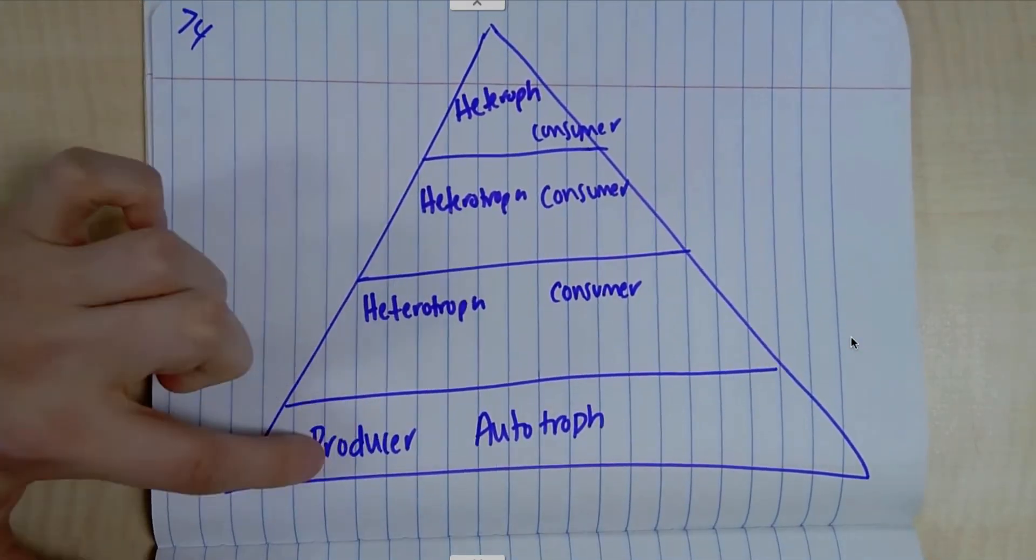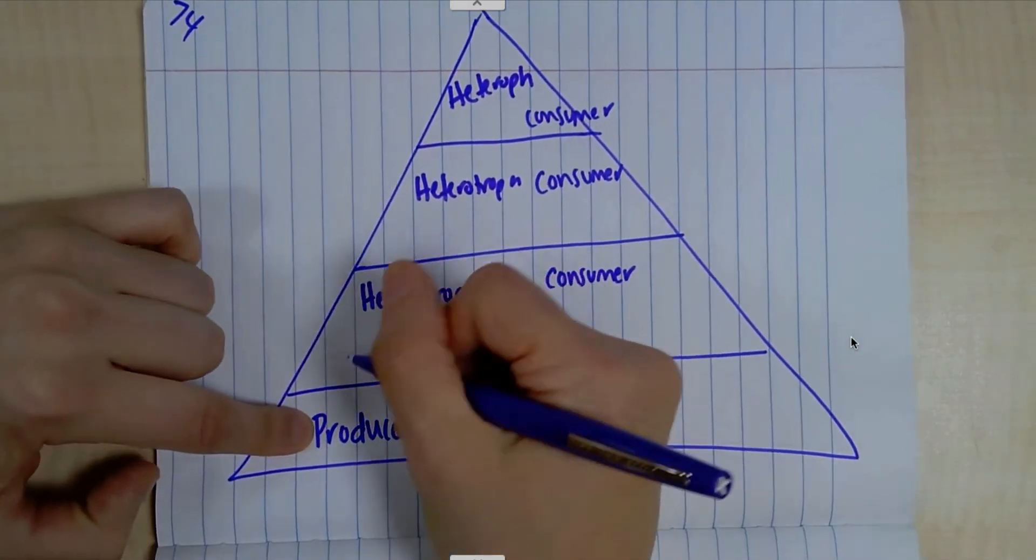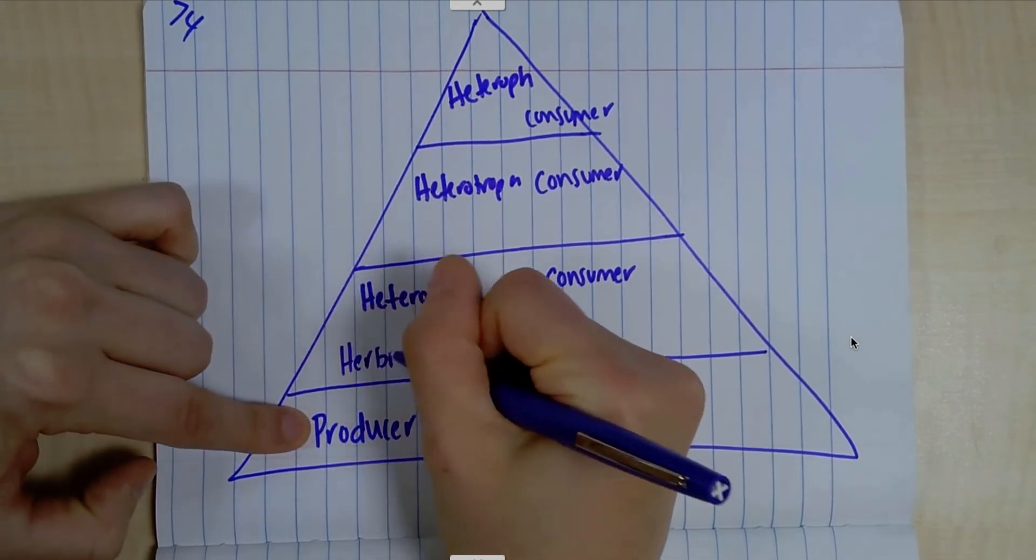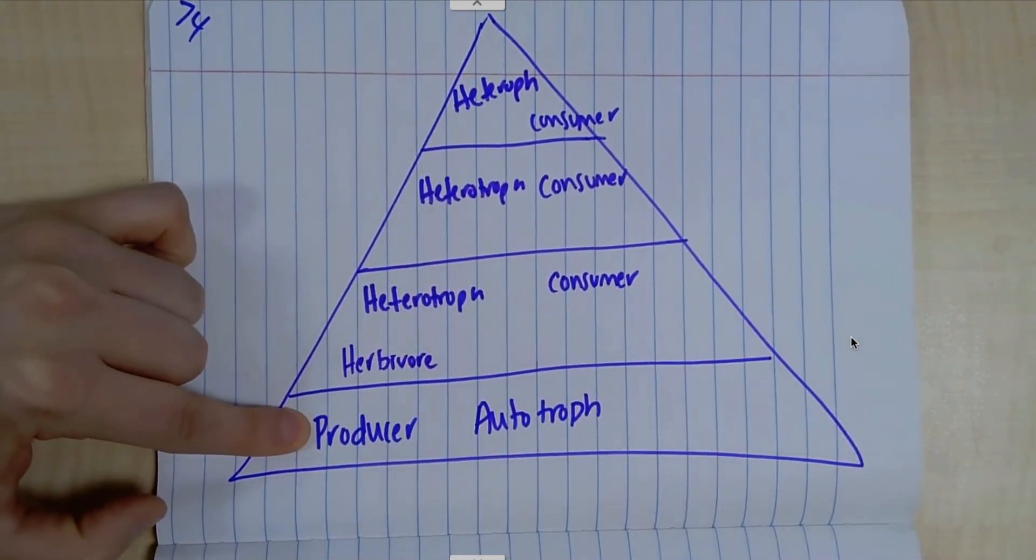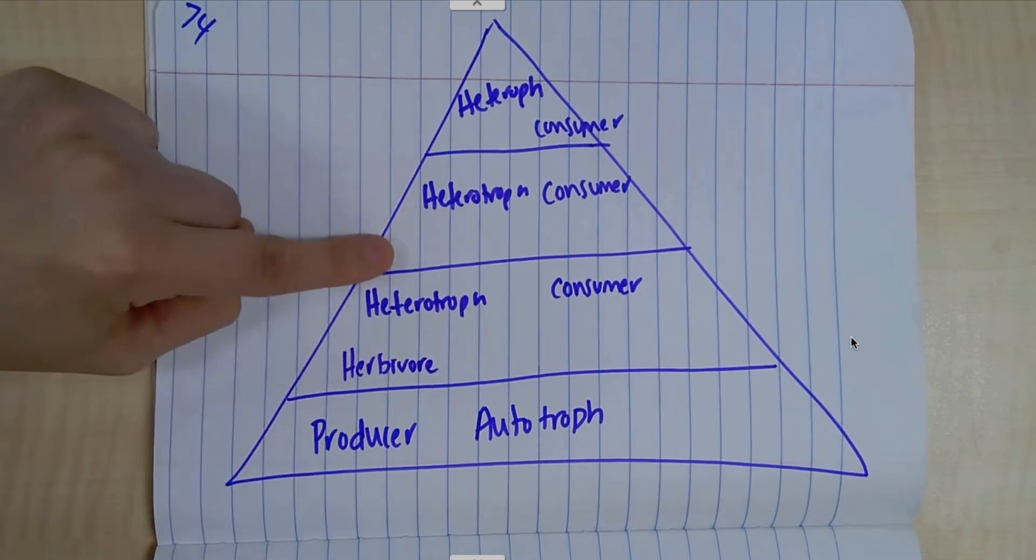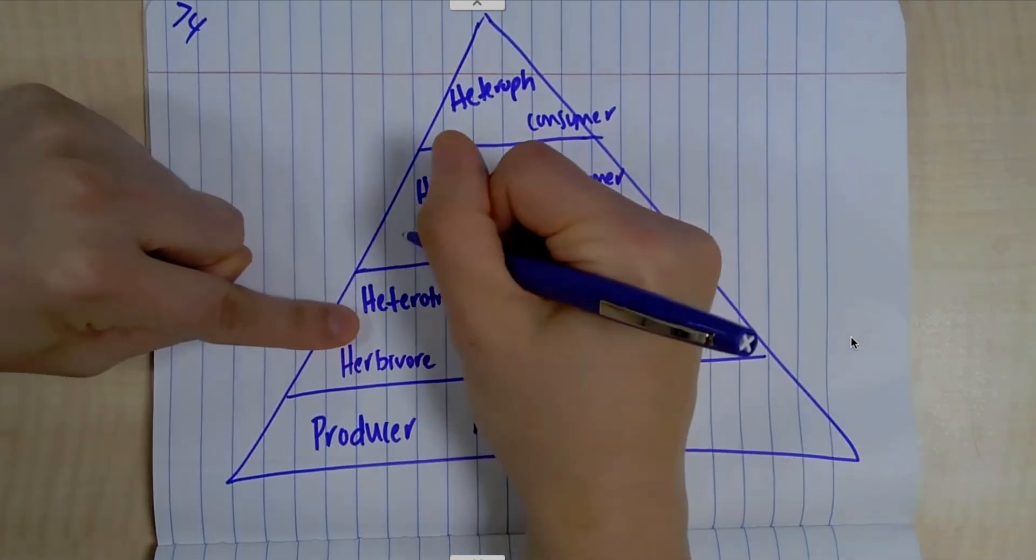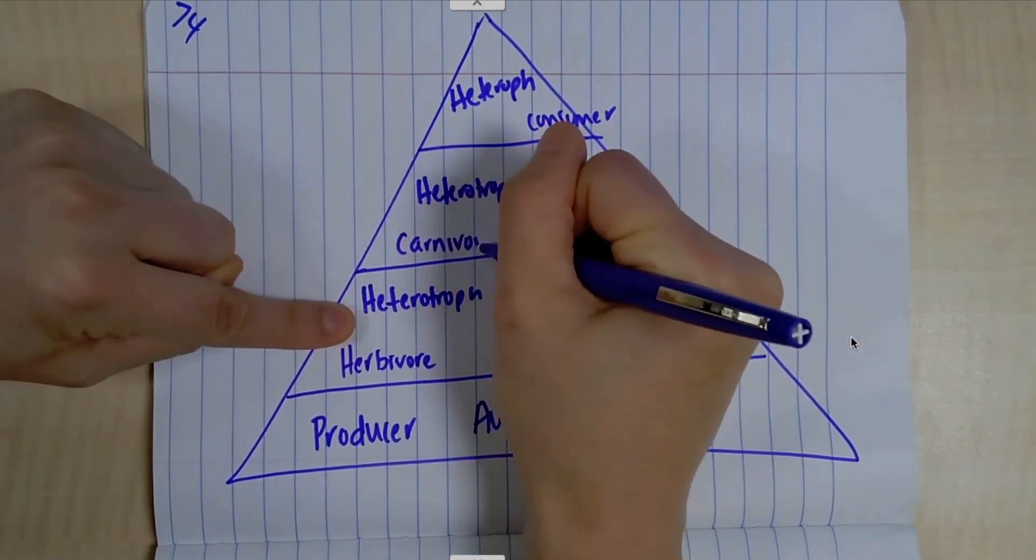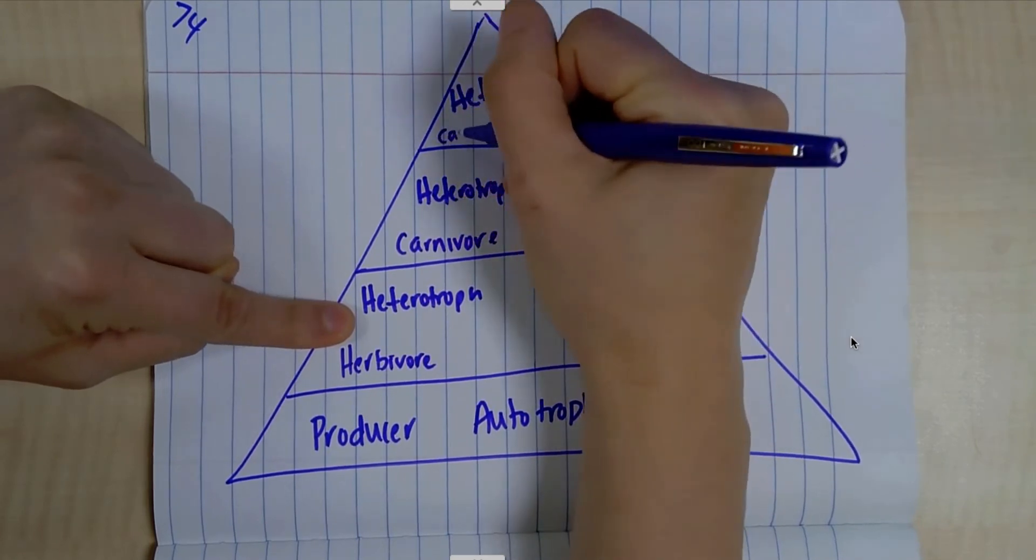Well, if we're looking at what eats producers, that would be a herbivore, only eats producers. That's plants. Well, if what eats herbivores, that would be a carnivore. And then this would also be a carnivore.